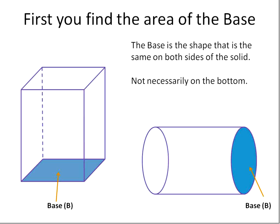When you want to find the volume of a prism or a cylinder, first you need to find the area of the base, and that is going to be the shape that is the same on both sides of the solid, so exactly across from each other, or they're parallel to each other. That's the base.